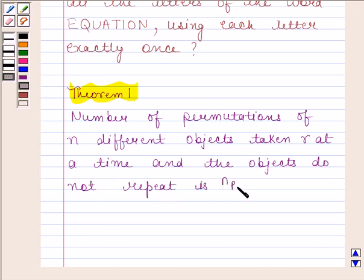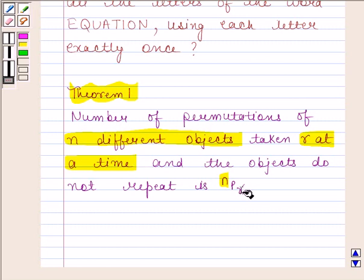is nPr, where n is the number of different objects and r is the number of objects taken at a time, and this nPr is equal to n factorial upon n minus r factorial.